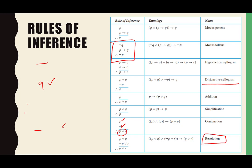Look at the hypothetical syllogism — this is basically a cut-out-the-middleman kind of deal. We're saying P therefore Q is true, and Q therefore R is true, then that means P therefore R is true.